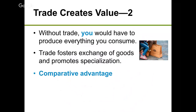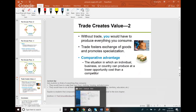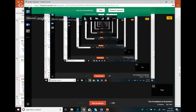Trade allows companies and countries to specialize in what they're good at, which means more goods are available in the economy. This leads to something called comparative advantage — a situation where an individual or company can produce a good at a lower opportunity cost (not a lower actual cost). We'll go over more details in the next couple of chapters. That's it for this chapter — email me if you have any questions. See you later!